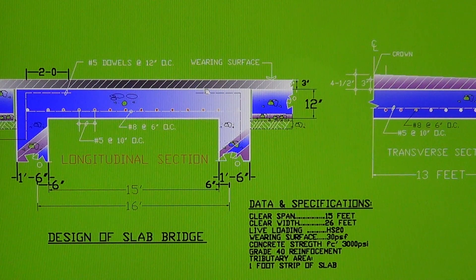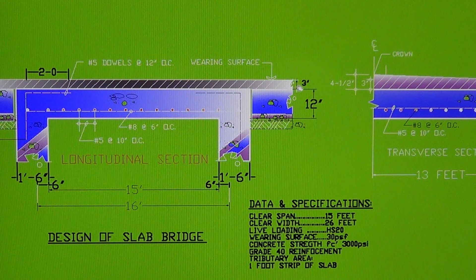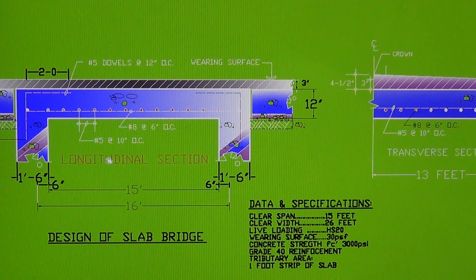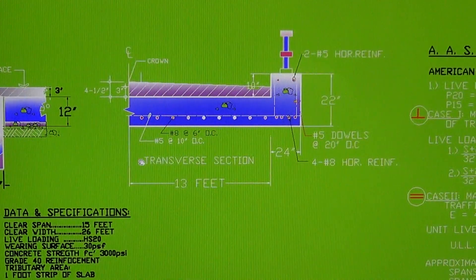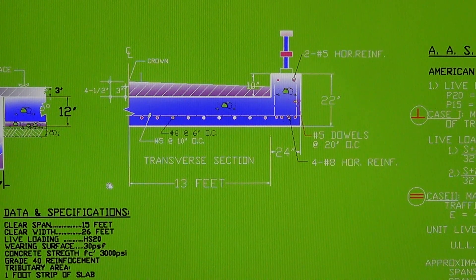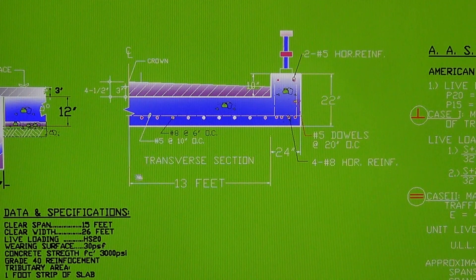The width of the beam is 24 inches — two feet. The thickness of the floor of the bridge is 12 inches, one foot, with a wearing of three inches thick. This is the longitudinal section of the bridge, and there are 13 transverse sections in total. This is a 16-feet-wide bridge.